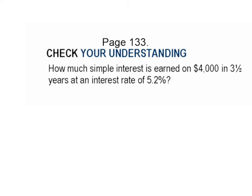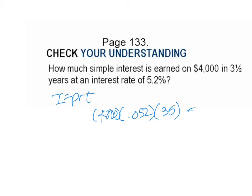Here's a check your understanding. How much simple interest is earned on $4,000 in three and a half years at an interest rate of 5.2%? So again, we're going to use I equals PRT. That is going to be principal $4,000, rate 0.052, time 3.5. You plug that into your calculator and you get $728. Get that down and we'll proceed to the next slide.